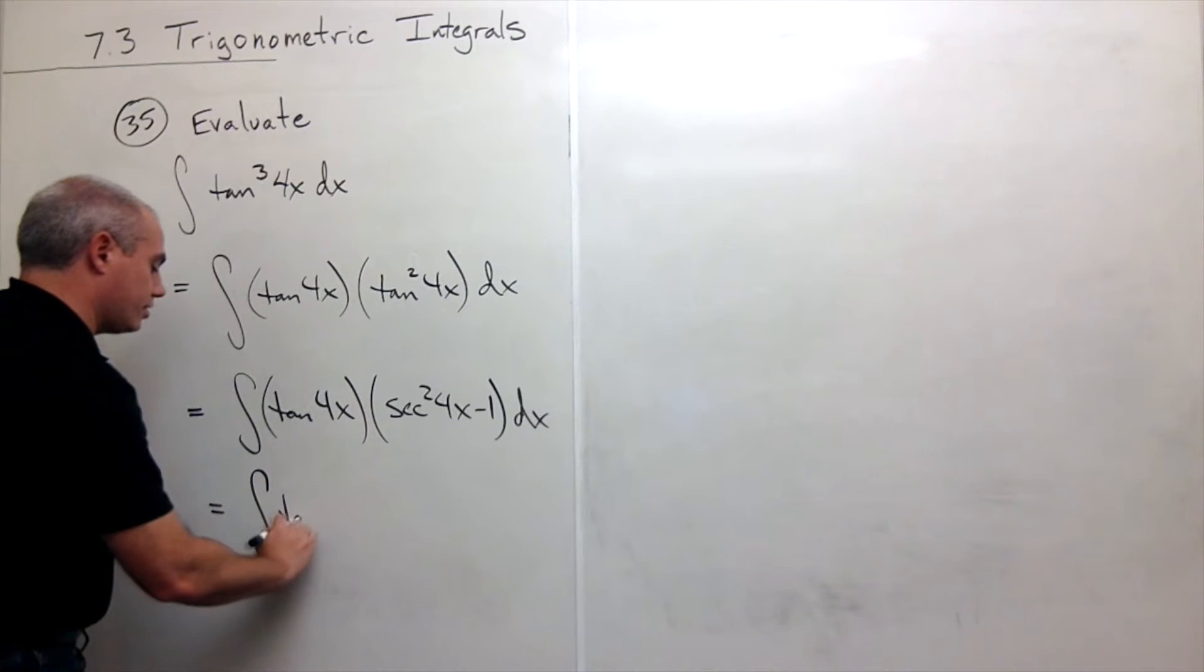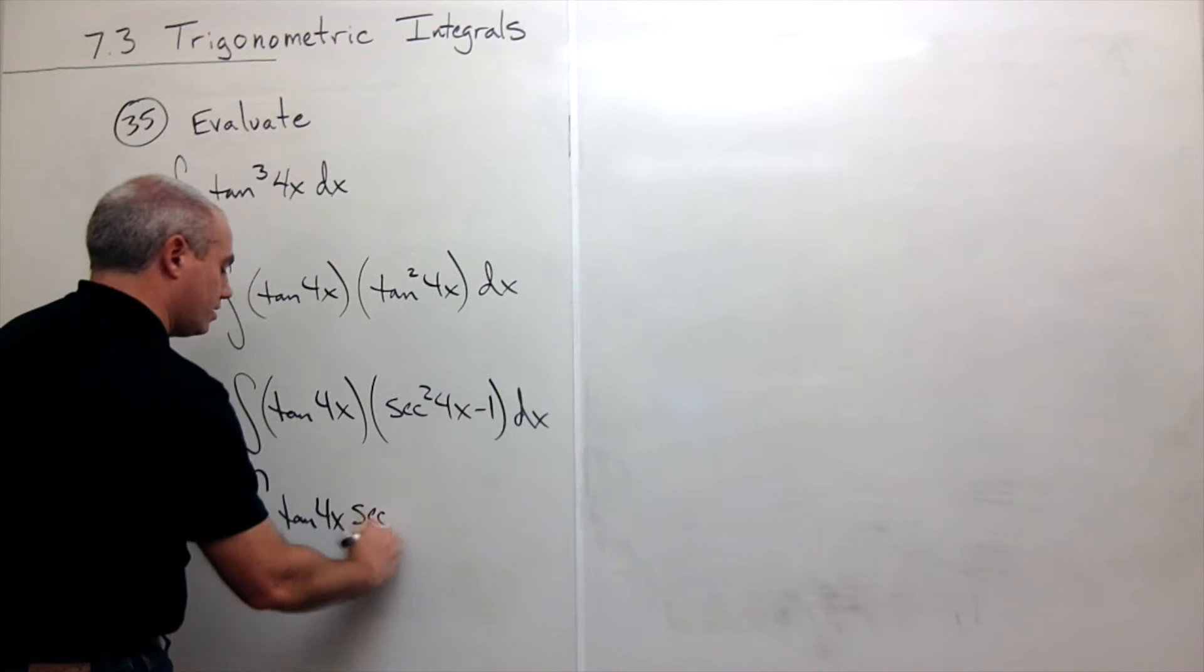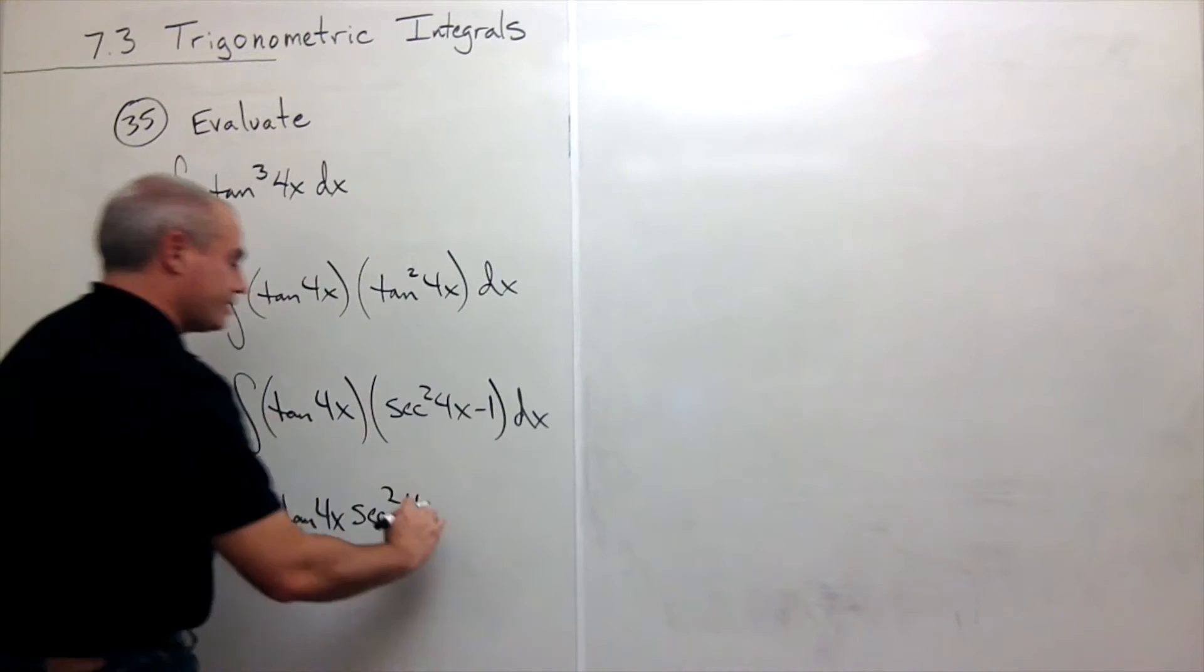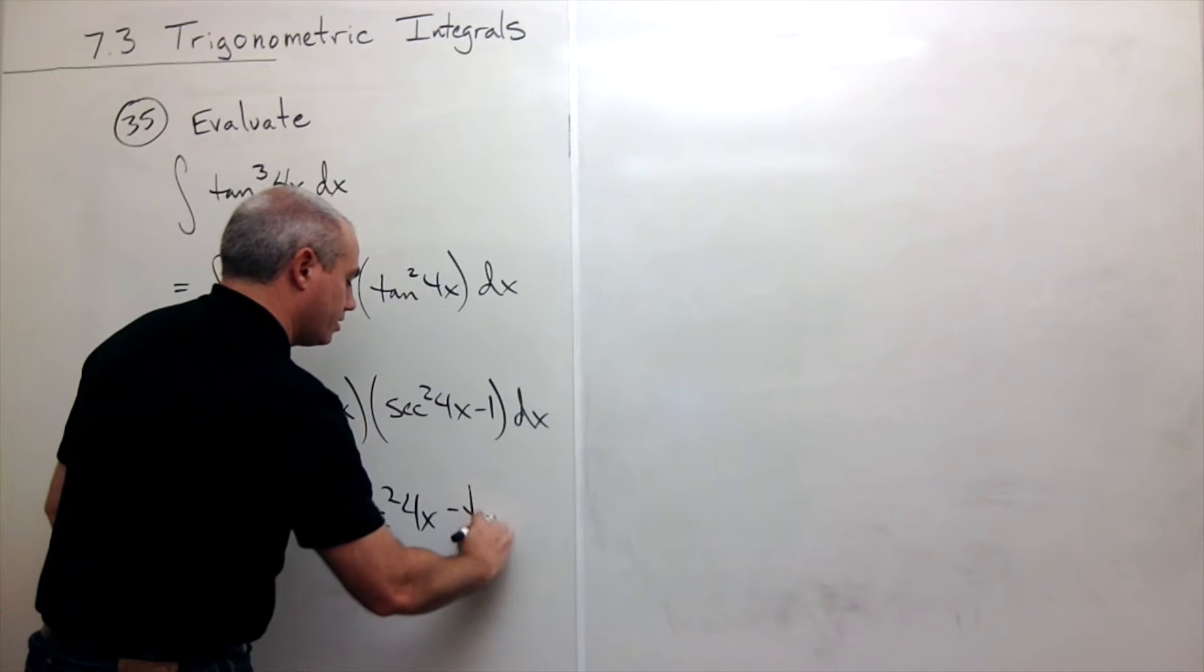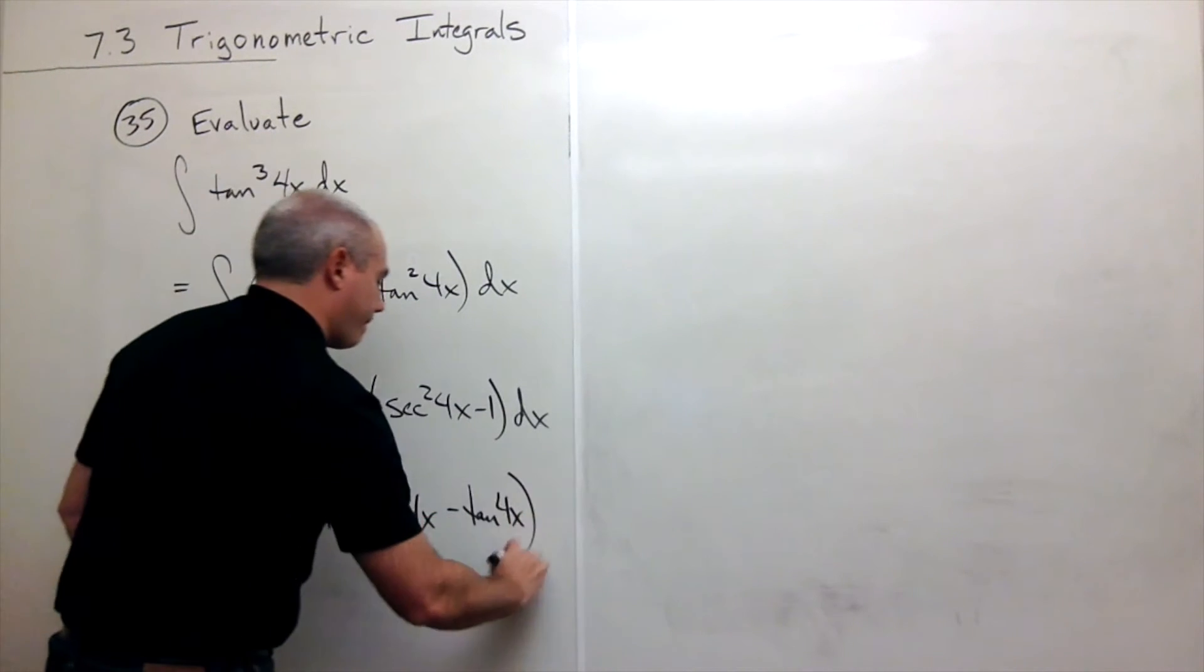I get tangent of 4x times secant squared of 4x minus tangent of 4x dx.